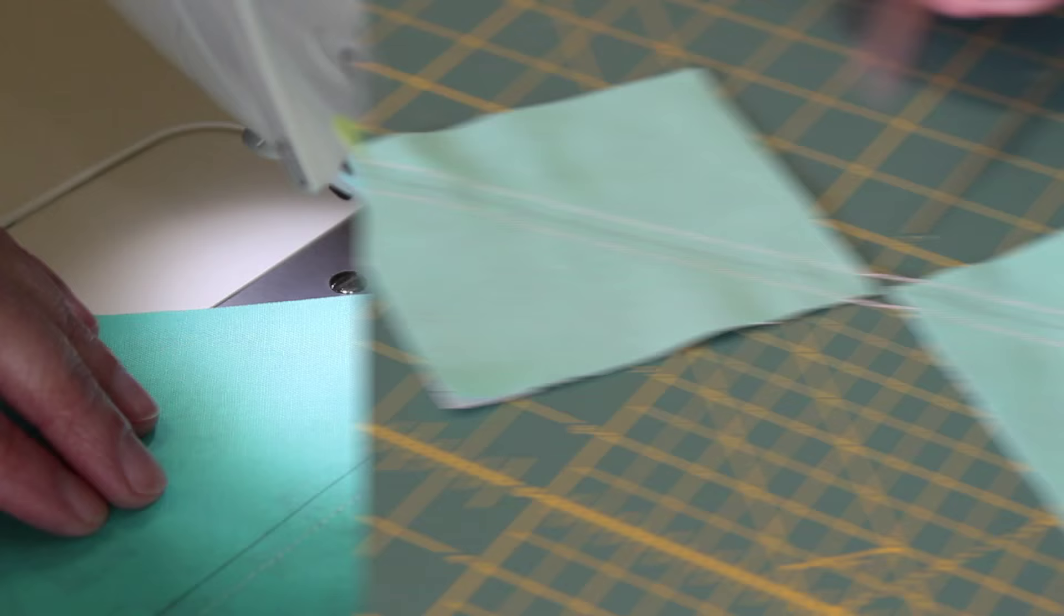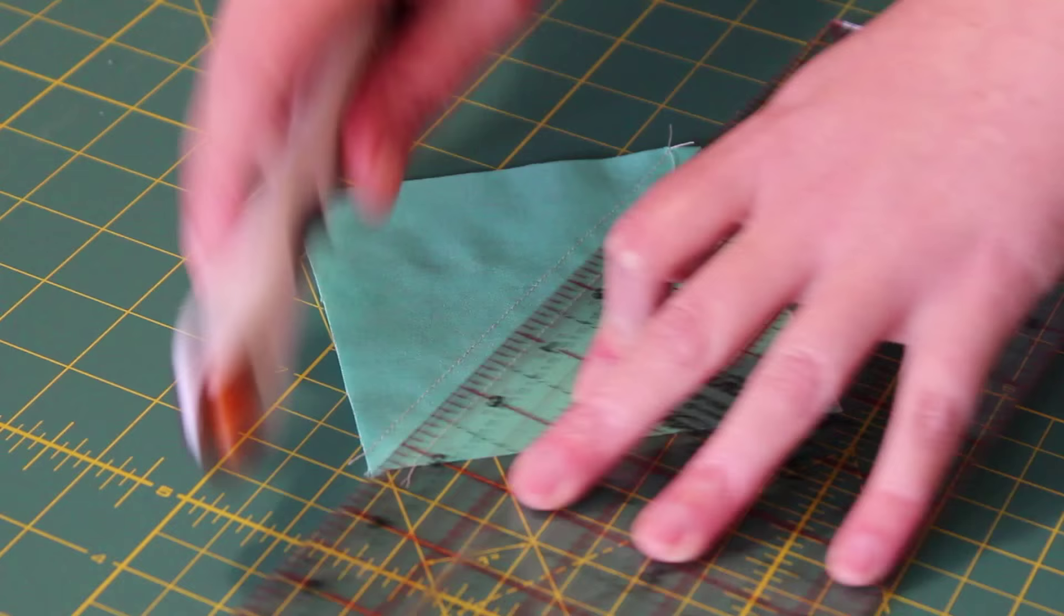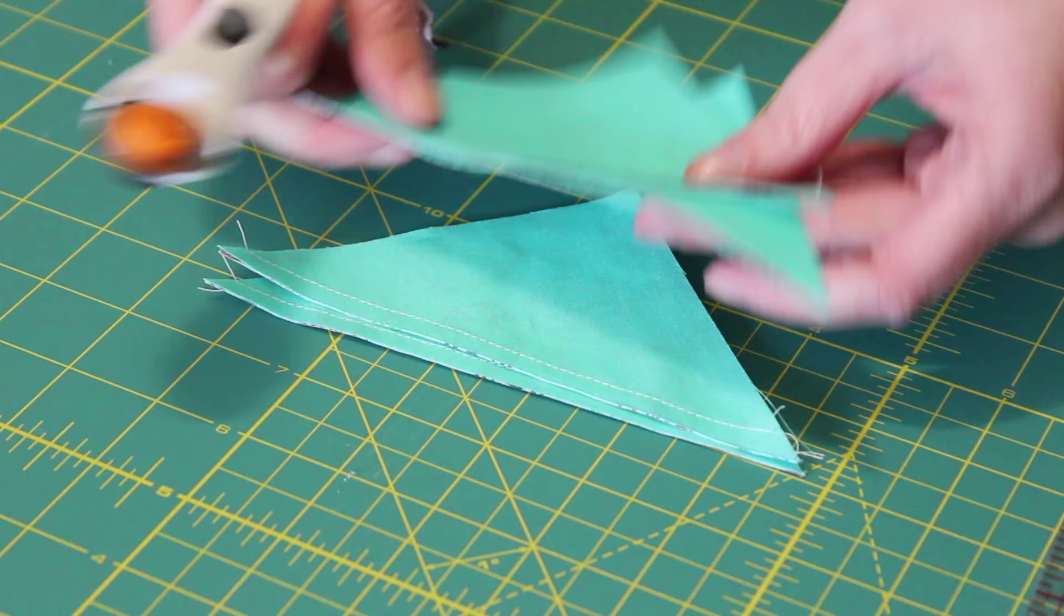Snip the joining threads and then with a ruler and blade, cut each square in half along the pencil line, resulting in four half square triangle units.